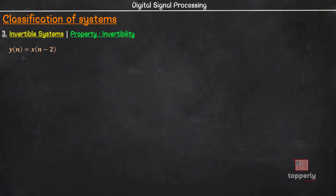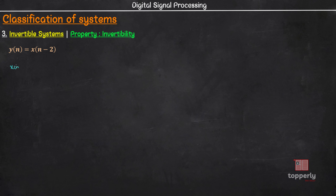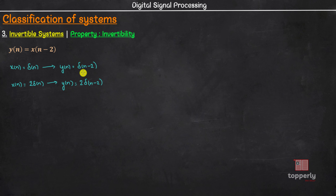The first system we have is y(n) = x(n-2). As discussed in the previous lecture, we will provide a standard signal as input to the system. Let us provide an input x(n) = δ(n). The corresponding output will be y(n) = δ(n-2). Now let us provide another input x(n) = 2·δ(n). For distinct inputs, we are getting distinct outputs. Hence, this is an invertible system.